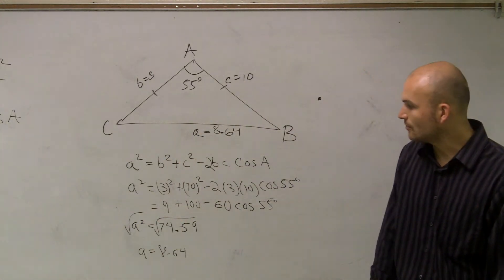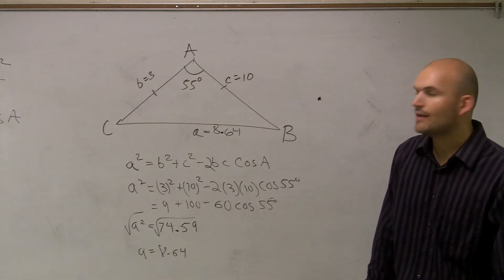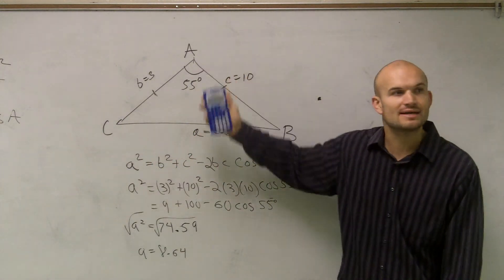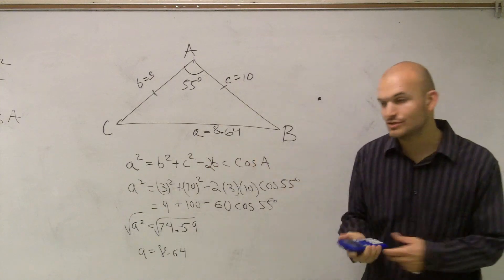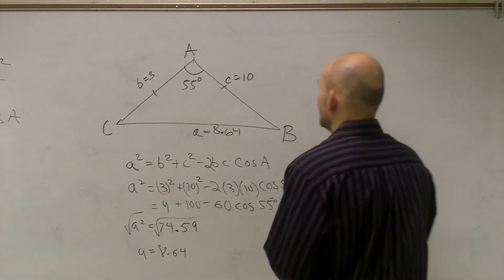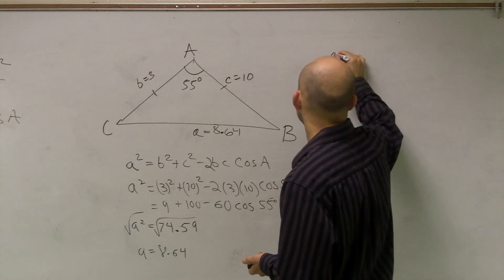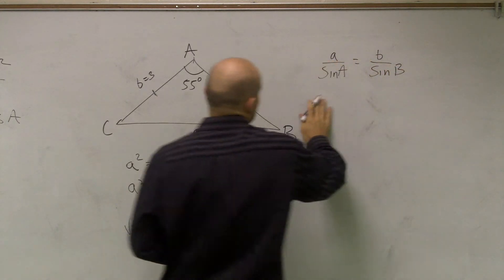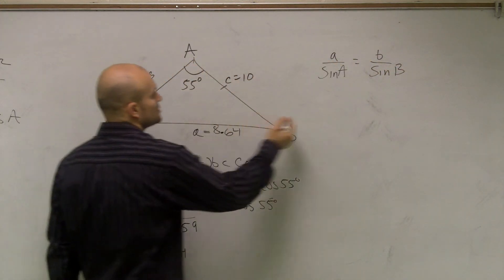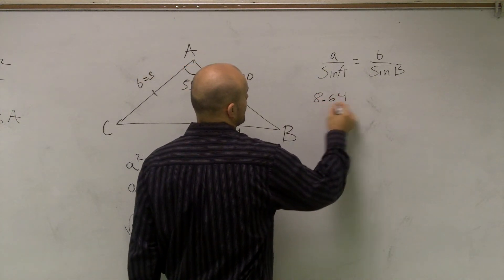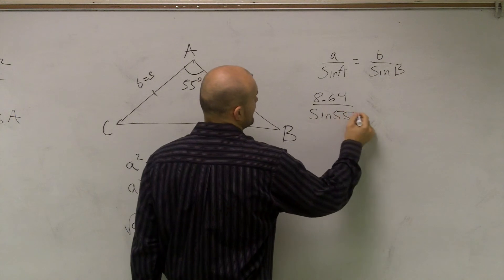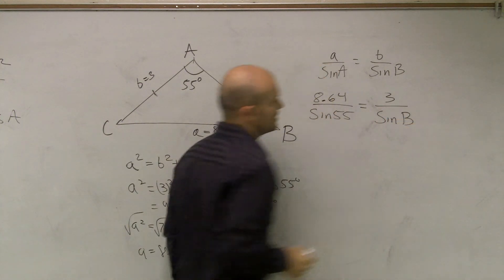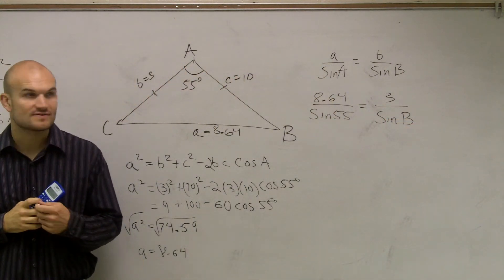Now that I've figured out what A is — A is 8.64 — I can use the law of cosines to figure out my missing angles. But now I have a ratio, and once I have a ratio between an angle and a side length, I can use the law of sines. So we can say A over sine of A equals B over sine of B. We already know the ratio of A over sine of A — that's 8.64 over sine of 55 degrees — and that equals B, which is 3, over sine of B.